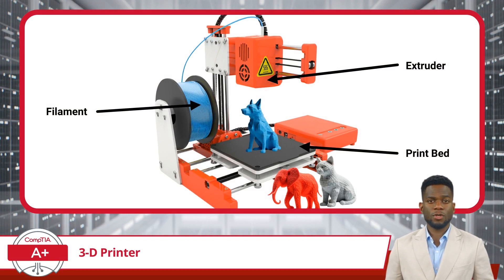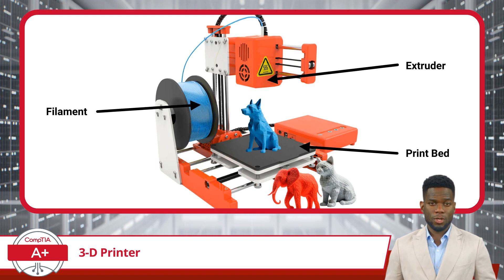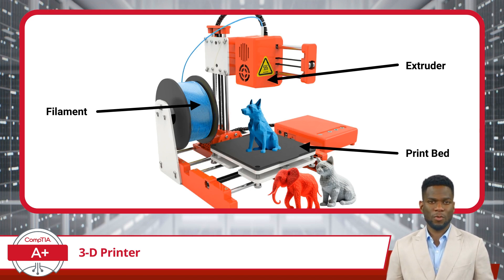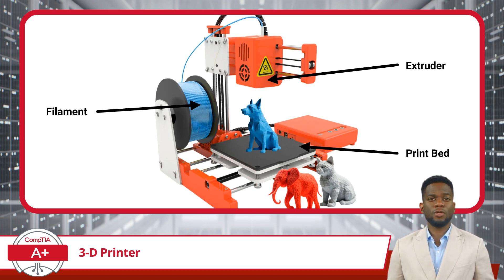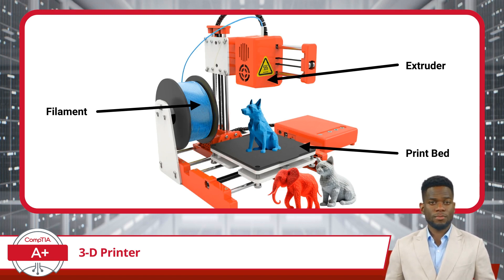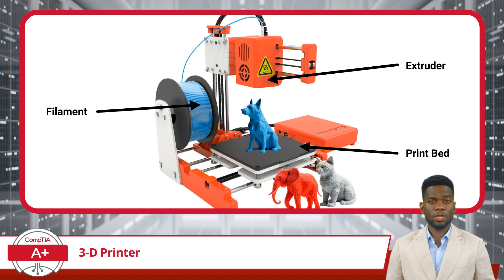The filament, extruder, and print bed are integral components of a 3D printer, each playing a vital role in the printing process. The filament acts as the raw material for 3D printing, available in various types such as plastics, metals, ceramics, and composites. It is fed into the extruder, where it is guided into the printer and melted for application. The extruder comprises a motor-driven gear mechanism that pushes the filament through a heated nozzle. As the filament passes through the extruder's hot end, it softens or melts, ready to be extruded onto the print bed or previous layers. The extruder's precise control over filament flow and temperature is paramount for achieving accurate and consistent print results.